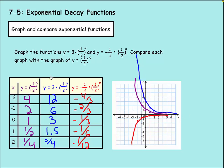The big thing to notice is that by changing the a value you can adjust how this works. You can multiply by a large number to get higher values and see the change happen more slowly, or multiply by a negative or very small number to make that change happen really quickly, or flip the graph using a negative.